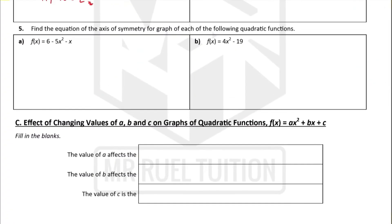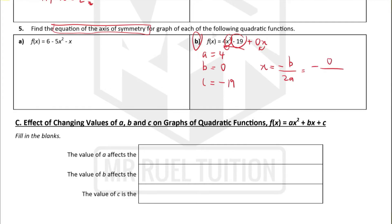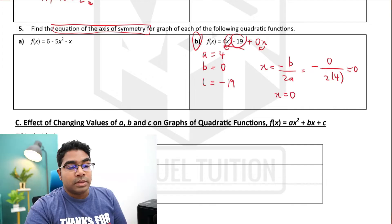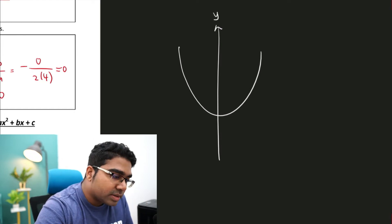Let's find the equation of the axis of symmetry when given quadratic expressions. Looking at example b, f(x) = 4x squared minus 19. We identify a equals 4, b equals 0 (no x term), and c equals negative 19. Using the formula x equals negative b over 2a, we get negative 0 over 2 times 4, which equals 0. Therefore the equation is x equals 0, meaning the axis of symmetry is the y-axis.